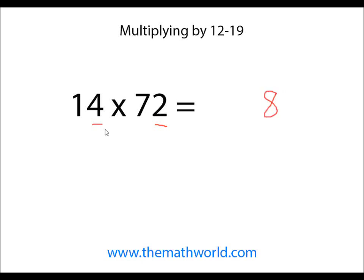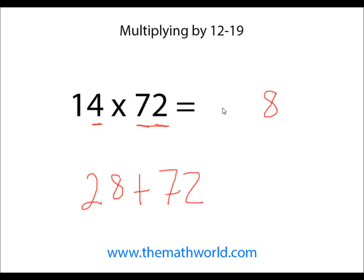Next thing we're going to do is multiply the ones digit in our teen number, so 4 times the other number. In this particular case, 4 times 7. We're going to go ahead and write down 28. We're going to add 28 to this entire number, 72. So 28 plus 72 is 100. So 14 times 72 is 1008.